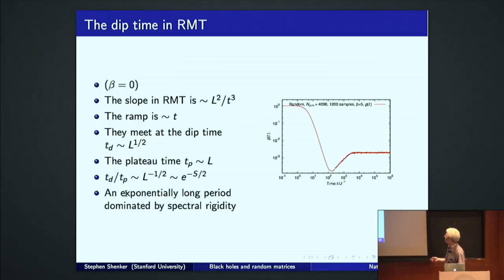So now we can be a little more quantitative. We have a slope that goes like L squared over T cubed. We have a ramp that goes linearly in time. There's a complicated thing here, but the scale is set by just asking when this function intersects that function. And that, even at this late hour, we can all do. This time, which we call the dip time, is the square root of L. This time, the plateau time is L. This is the square root of L. Their ratio is L to the minus a half, which is E to the minus the entropy of the system over two. These are exponentially separated. This is an exponentially late time. So is this. But there's an exponentially long period where spectral rigidity dominates this quantity.